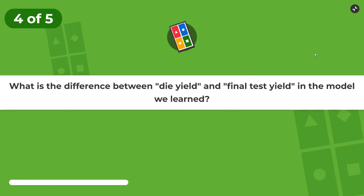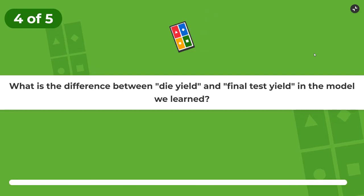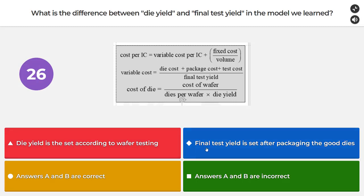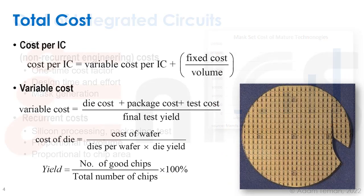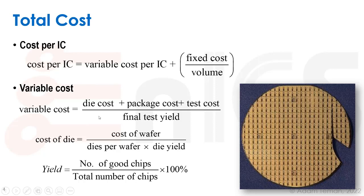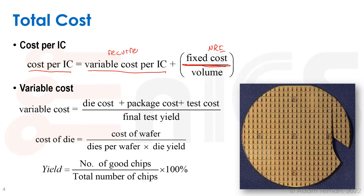Question four: what is the difference between die yield and final test yield? The choices are: die yield is set according to wafer testing; final test yield is set after packaging the good dies; both A and B are correct; or both are incorrect. I'm going to choose both A and B are incorrect — let's see why.